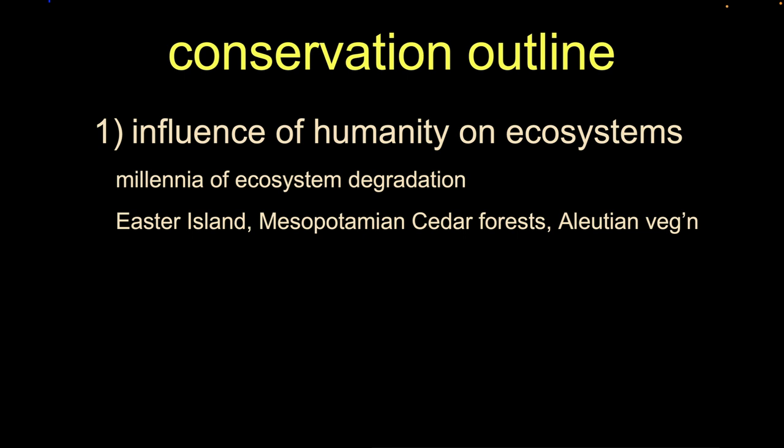The previous presentation set up this notion that humans can indeed directly influence ecosystems, and that we can degrade ecosystems and have been doing this for a long time. We have lots of evidence that humans have had the potential for thousands of years to change ecosystems and to have our actions play out for decades if not centuries later. Those previous examples were Easter Island, the cedar forests around Mesopotamia, and vegetation in the wake of settlements in the Aleutian archipelago.